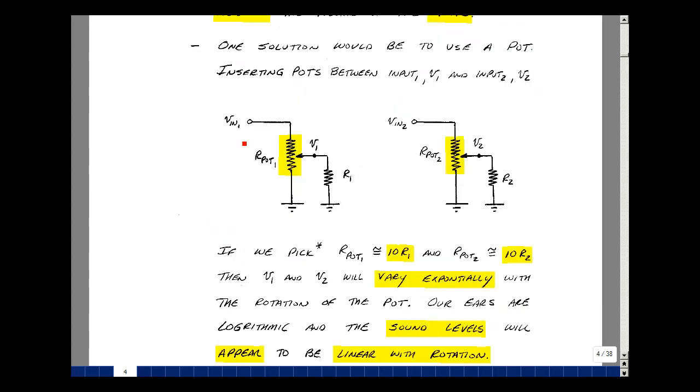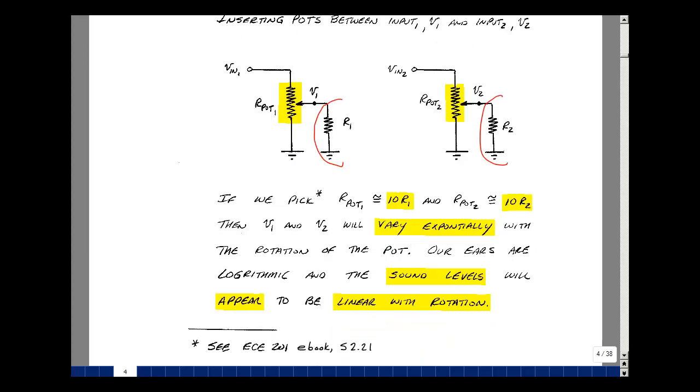One simple way to do that is to add a pot to the inputs of the summing inverter. Let V1 and V2 be our music and our signal picked up by the microphone. Put a pot here between that input and ground, and hook it to the summing inverter. The input impedance of that circuit is just R1 and R2. If we pick the potentiometer resistance to be about 10 times the value of R1, and likewise for the second pot, as we vary this pot, we'll vary the voltage exponentially.